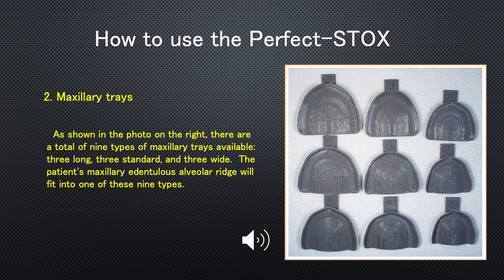Maxillary Trays: As shown in the photo on the right, there are a total of nine types of maxillary trays available — three long, three standard, and three wide. The patient's maxillary edentulous alveolar ridge will fit into one of these nine types.